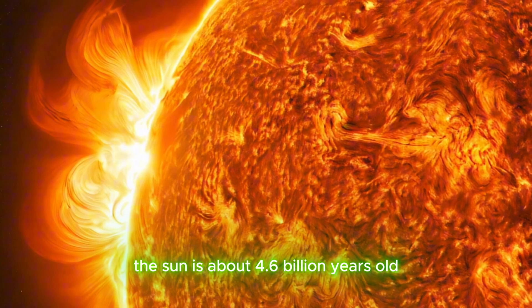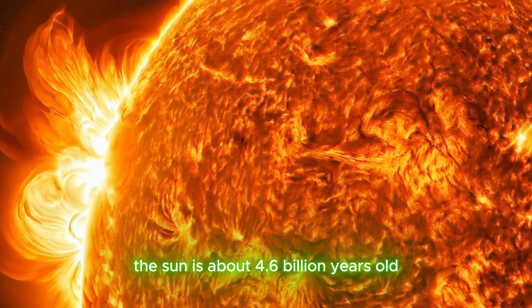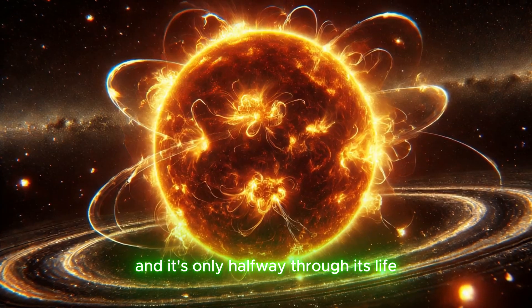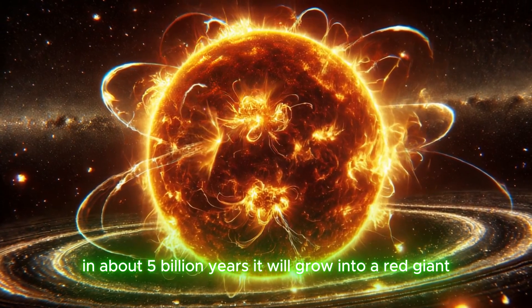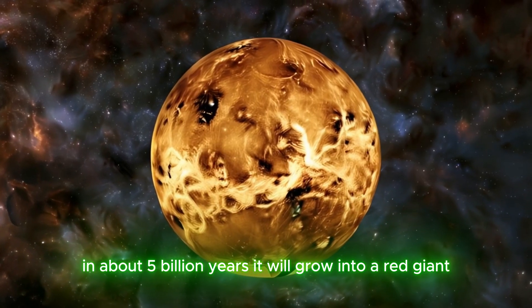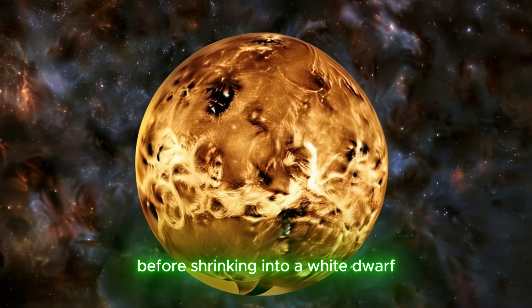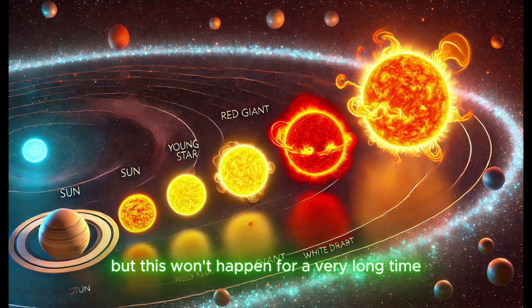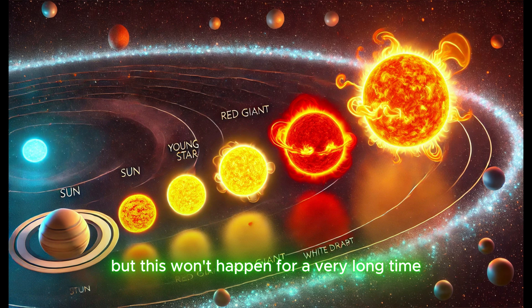The sun is about 4.6 billion years old, and it's only halfway through its life. In about 5 billion years, it will grow into a red giant before shrinking into a white dwarf. But this won't happen for a very long time.